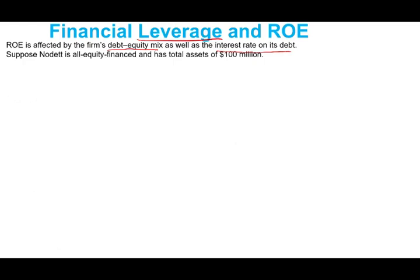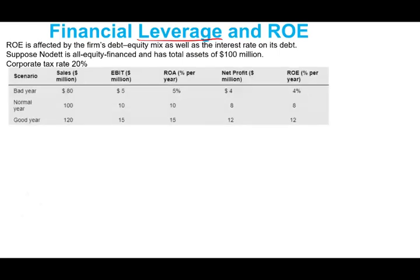Suppose a company called 'no debt' is all-equity financed and has total assets of 100 million. Corporate tax rate for simplicity is 20%. We have three scenarios: bad year, normal year, and good year.